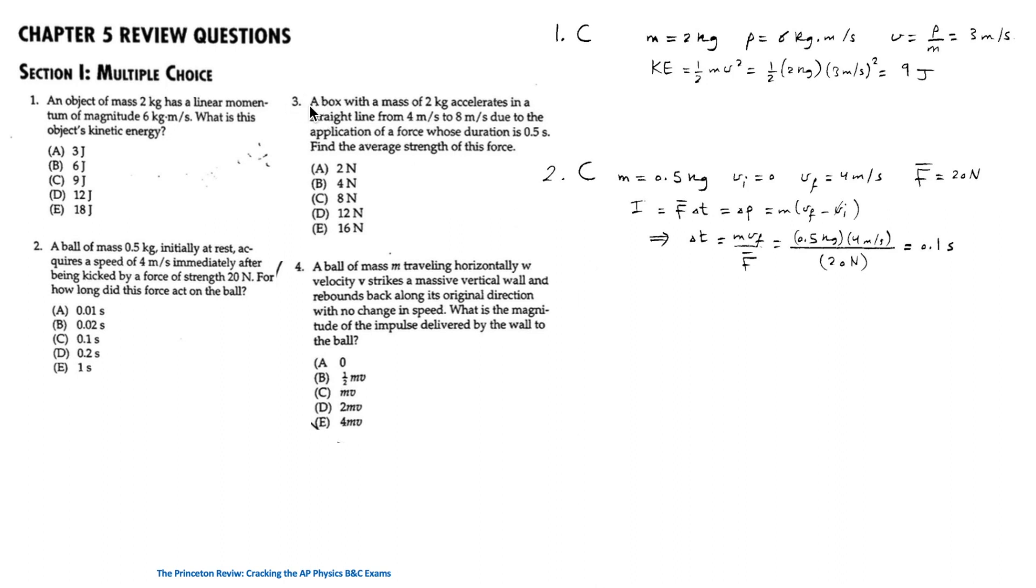For question 3, a box with a mass of 2 kilogram accelerates in a straight line from 4 meter per second to 8 meter per second due to the application of a force whose duration is 0.5 second. Find the average strength of this force. This is the same as the previous question, except that here delta T is given, and we want to find the average force. So the impulse is equal to this equation. The average force is the change in momentum over time equal to 16 newton. So the answer is E.